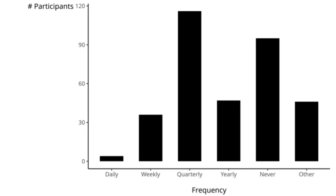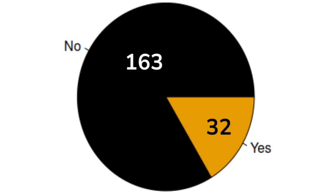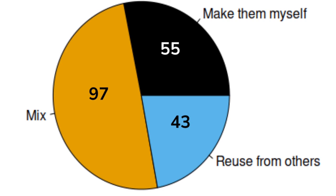We also see the frequency with which participants reteach themselves Git. Like any language, if you don't use it often enough, it's easy to forget. People reteach themselves quarterly, and very few on a daily basis. As seen in many Git workshop materials, it is not a tool someone can learn in one go. More than half of participants have actually taught Git to others, but the majority do not regularly teach it. Materials used are sometimes from others, sometimes made themselves, or a mixture of both.